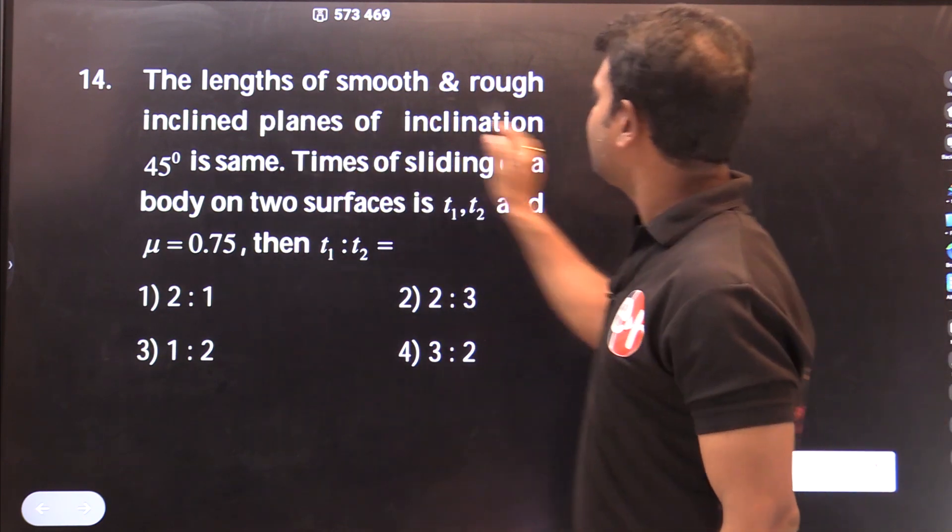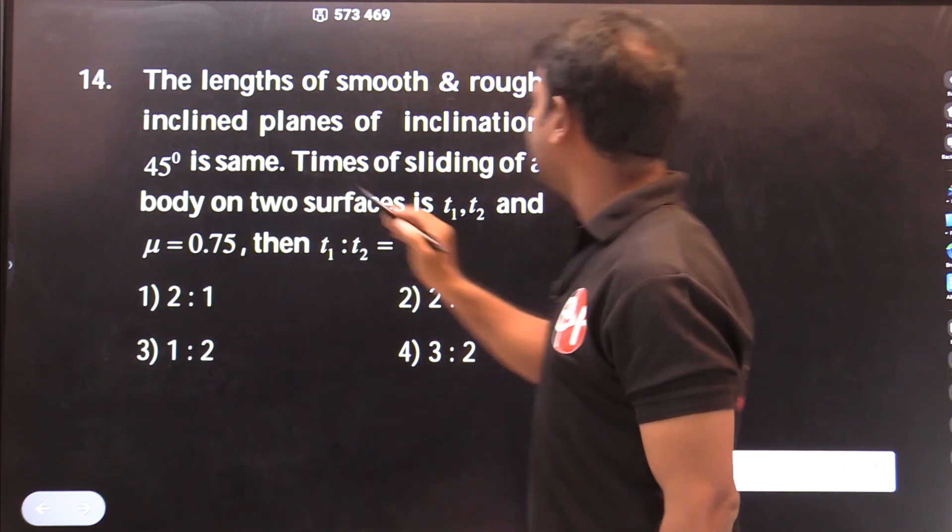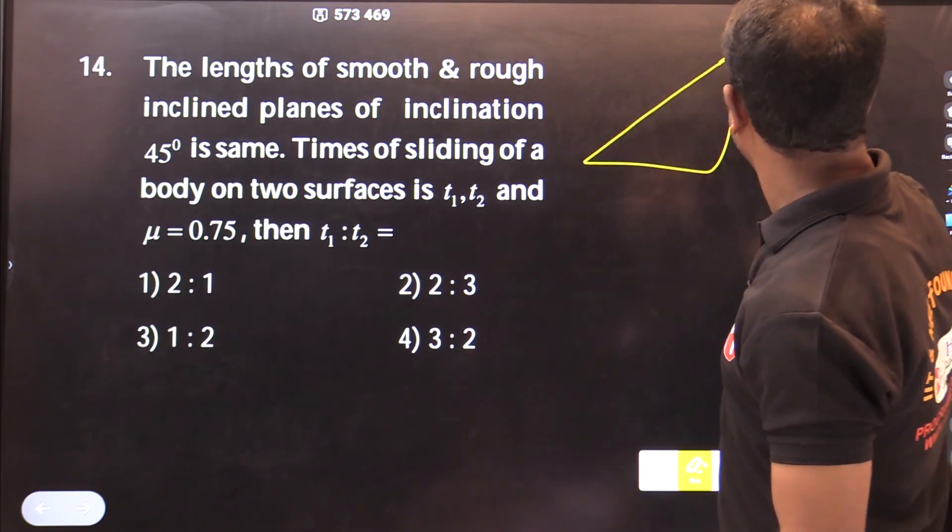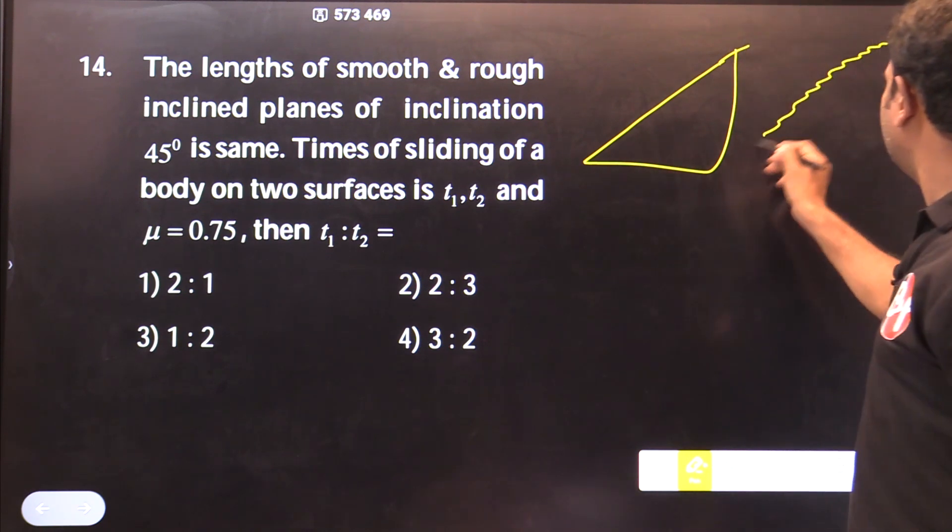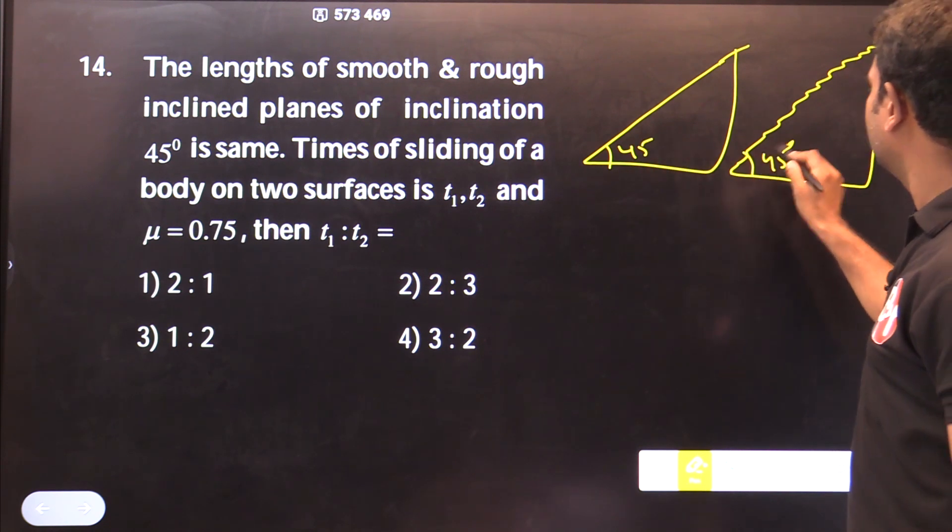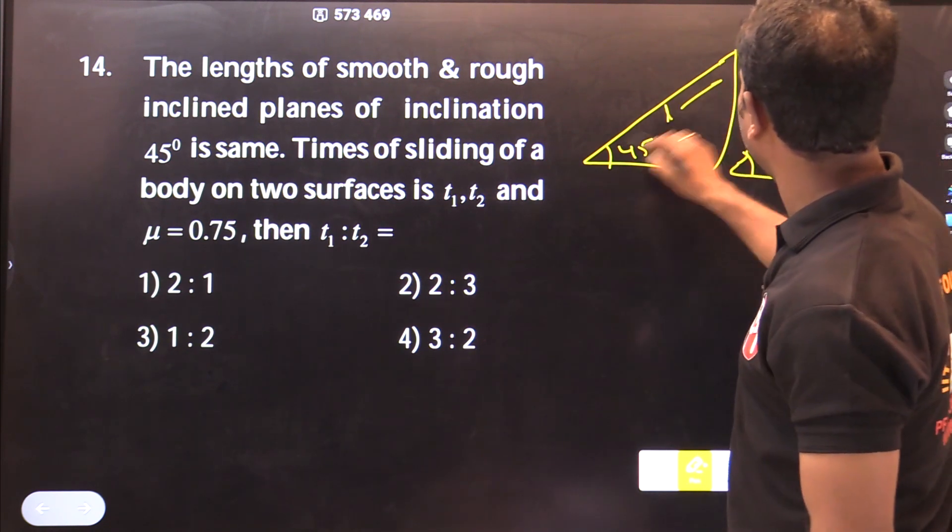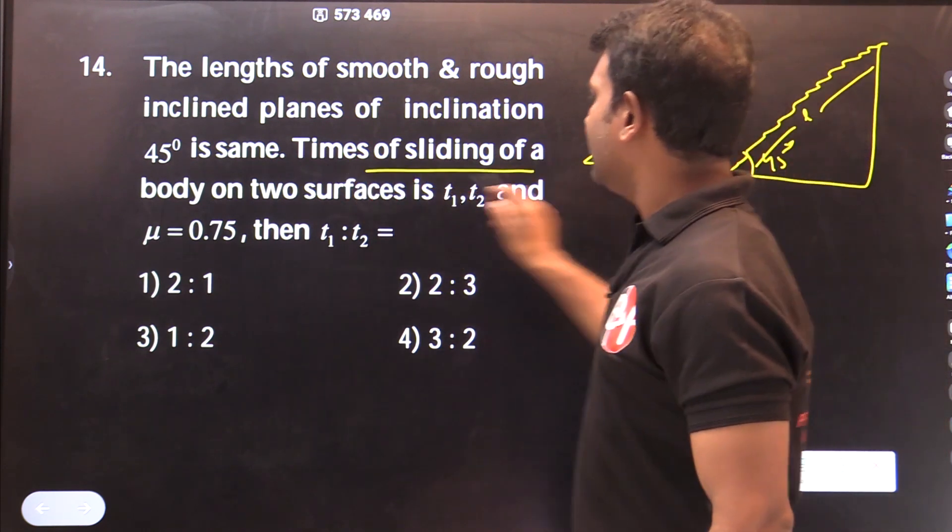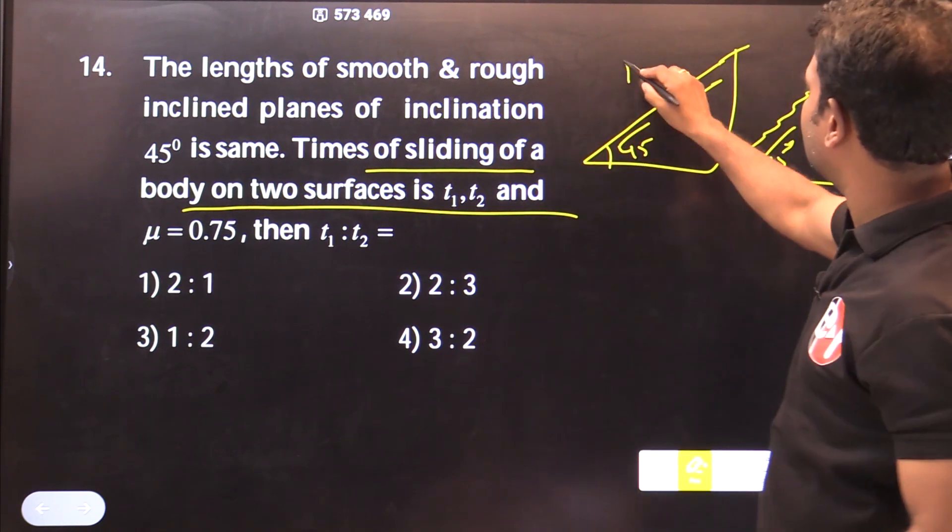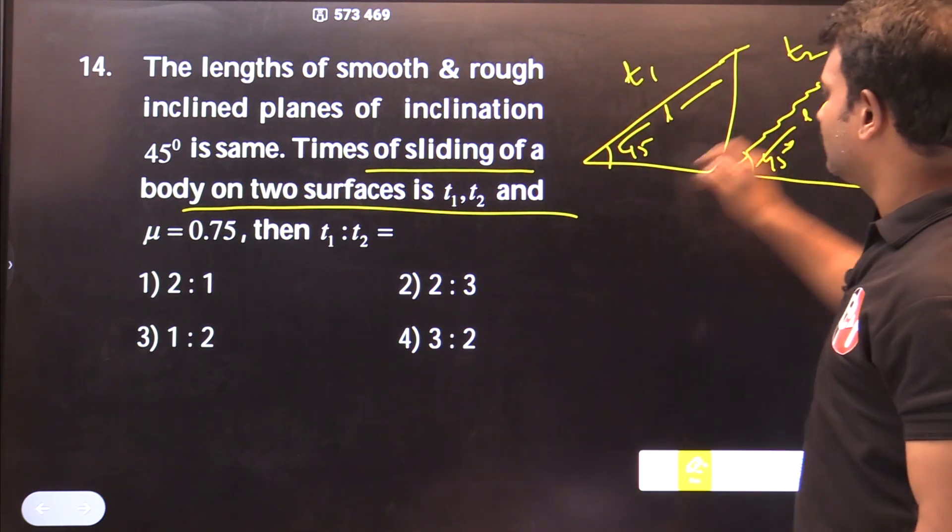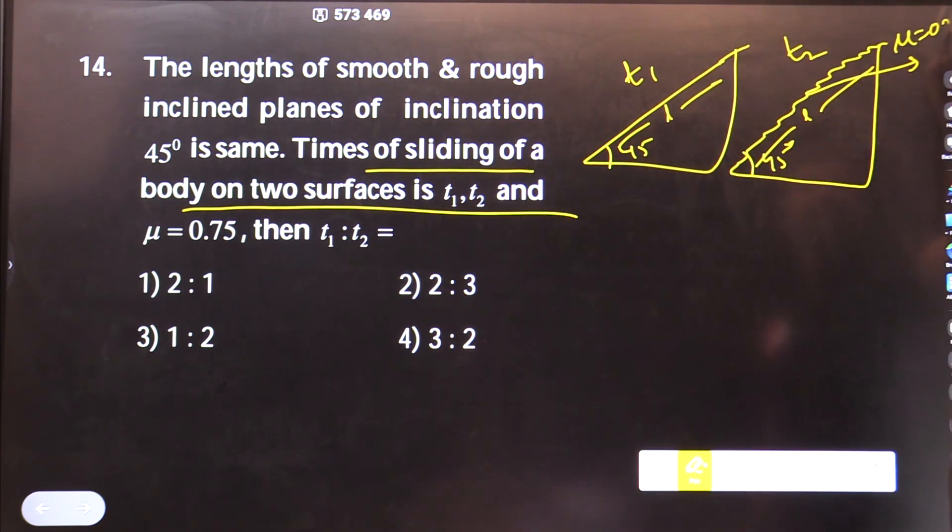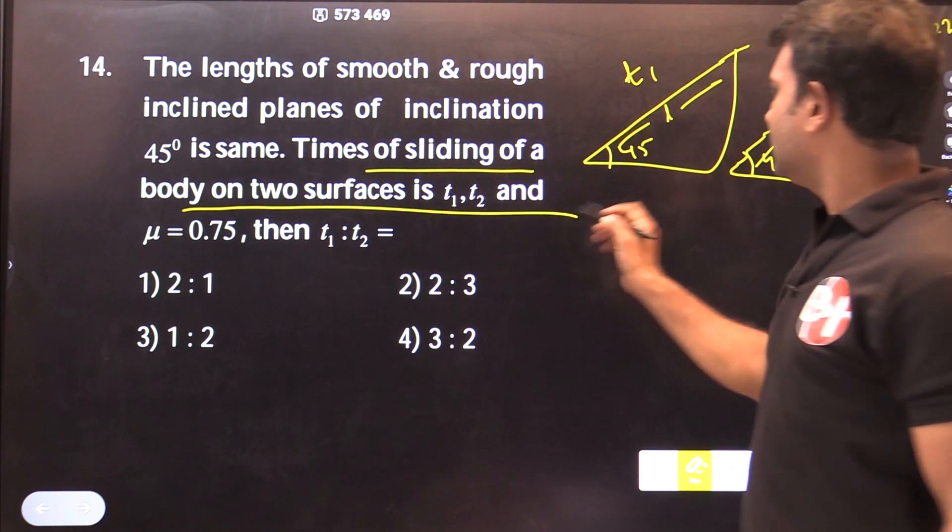The length of smooth and rough inclined planes of inclination 45 degrees is same. This is smooth inclined plane, this is rough inclined plane. The length is same, the angle is same, 45 degrees. Times of sliding on the two surfaces is T1 and T2. First smooth, the other rough. Mu is equal to 0.75. That is the ratio T1 by T2.